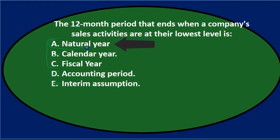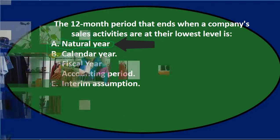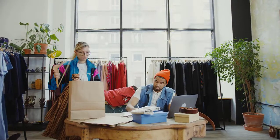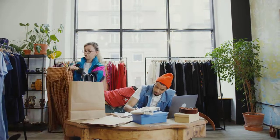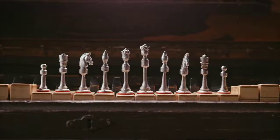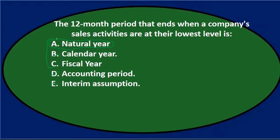A looks like the best choice here because the natural year is the time frame that ends at the lowest level. That would apply to something like a retailer — they have certain points in their business cycle that are heavier than others, and they may want to align their business so the natural year ends at the lowest level. They might also make that their fiscal year, but they'd do so because it was a natural year.